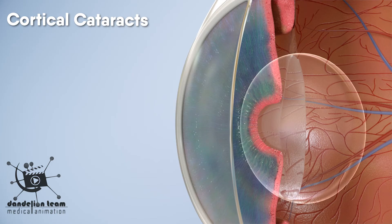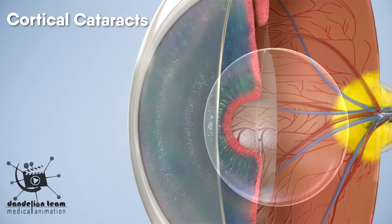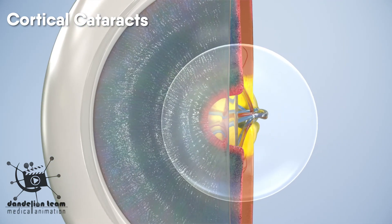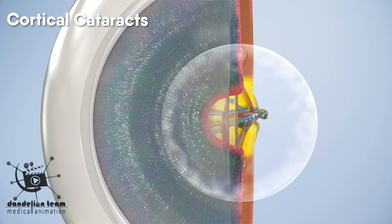Cortical cataracts affect the edges of the lens and begin as whitish wedge-shaped streaks on the outer edge of the lens cortex. As it slowly progresses, the streaks extend to the center.